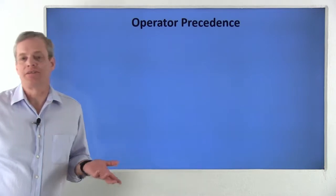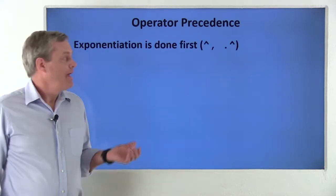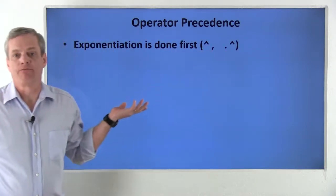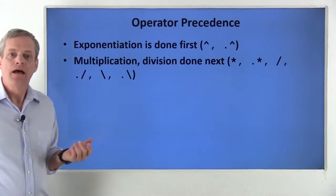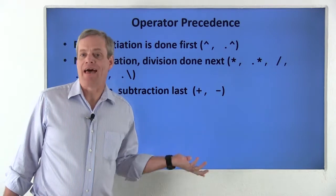The rules of precedence are fairly straightforward. Exponentiation is done first. Multiplication and division are done next. Addition and subtraction are performed last.